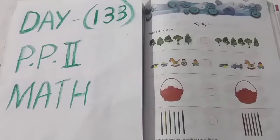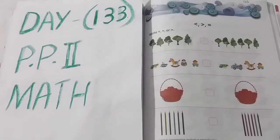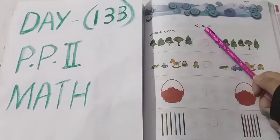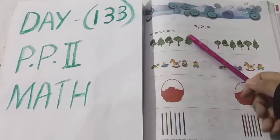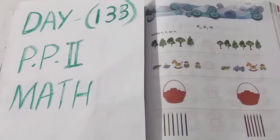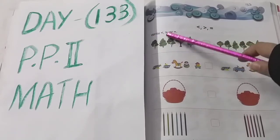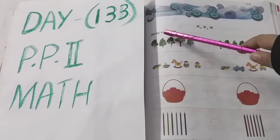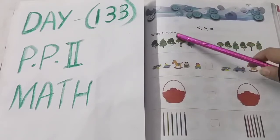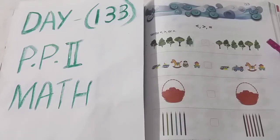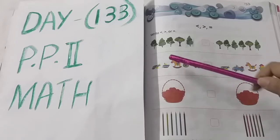Welcome everyone, I hope everyone is fine. Children, in the previous video we already learned less than, greater than, and equal to. Here there is an activity related to those three topics. These are the symbols of less than, greater than, and equal to. Here you can see some objects — we have to count those objects and put the correct symbol.